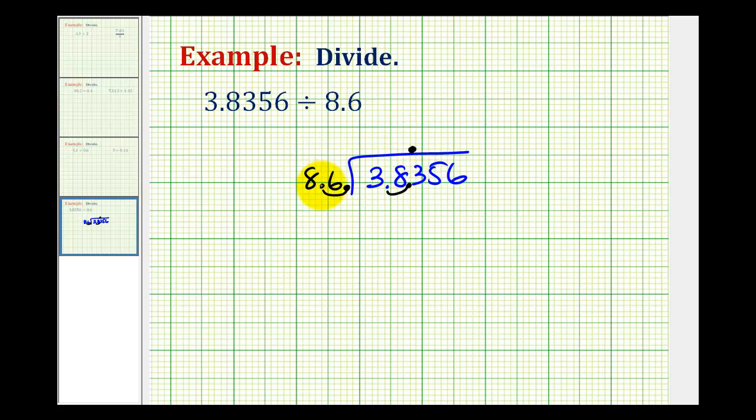So we want to know how many 86's there are in, well 38's not large enough so now we look at 383. How many 86's in 383? Not an easy question but I know that 2 times 86 would be 172 so let's try a 4. 4 times 6 is 24 carry a 2. 4 times 8 is 32 plus 2 that's 34. Remember as long as this difference is less than 86 this 4 is correct.